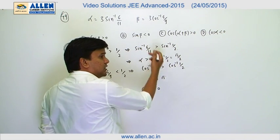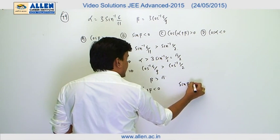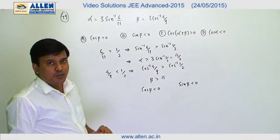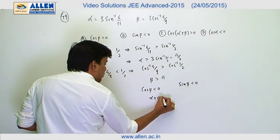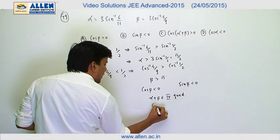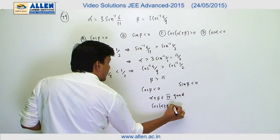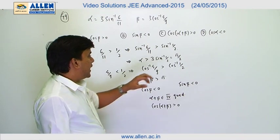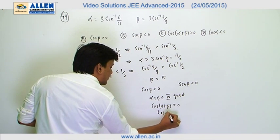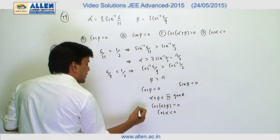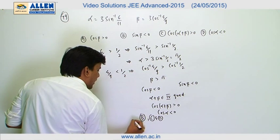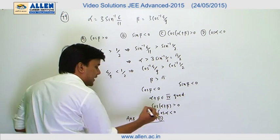For alpha + beta: alpha is slightly above π/2 and beta is slightly above π, so alpha + beta is approximately 270°, placing it in the fourth quadrant. Therefore cos(alpha + beta) is positive. Since alpha is greater than π/2, alpha is in the second quadrant, so cos alpha is negative. The correct options are B, C, and D.